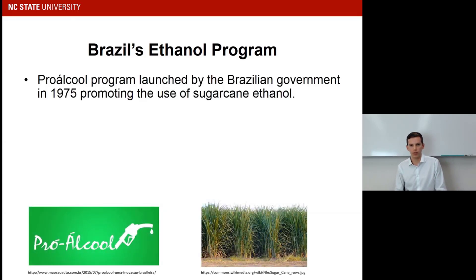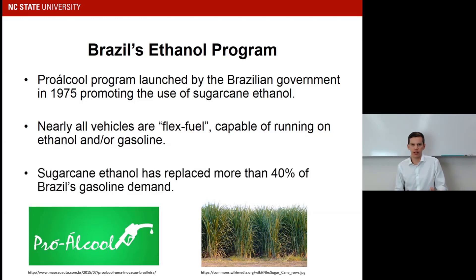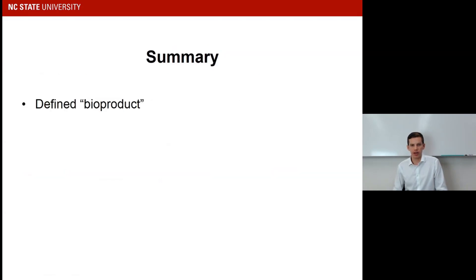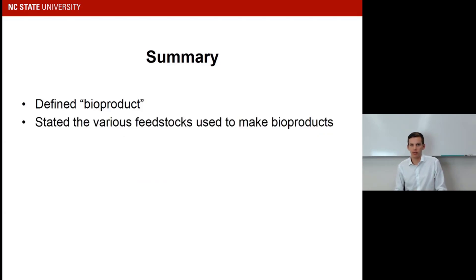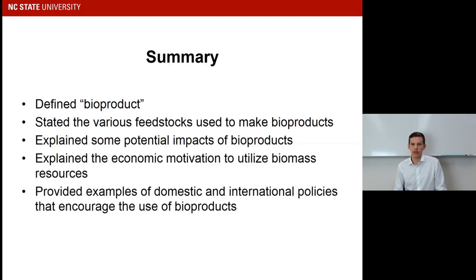Brazil and the United States are the biggest producers of biofuels. Brazil's Pro Alcool program, developed in 1975 to promote the use of sugarcane ethanol, was a huge success — mainly because sugarcane grows very easily in Brazil. Nearly all vehicles in Brazil are flex-fuel and can run on entirely ethanol or entirely gasoline. Sugarcane ethanol has replaced more than 40% of Brazil's gasoline demand. In summary, this lecture defined bioproducts, stated the different feedstocks, explained environmental impacts, economic motivations, and provided examples of domestic and international policies to encourage the use of bioproducts.